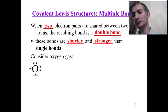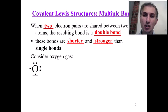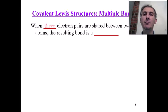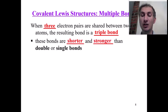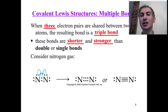A double bond is stronger than a single bond because we have two bonds shared. A triple bond has three bonds, making it stronger than both double and single bonds — for example, nitrogen forms a triple bond.